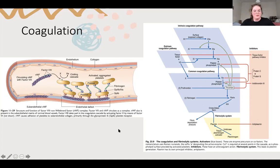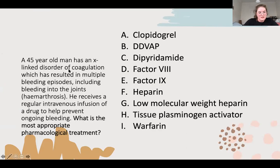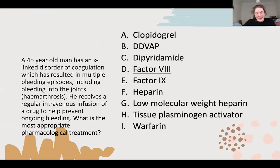Question: 45-year-old man, X-linked disorder of coagulation, multiple episodes of bleeding, bled into his joint, gets regular transfusions of some drug. This is haemophilia A - factor eight - and it's more common than haemophilia B which is factor nine. Haemophilia A and factor eight sort of sound the same and it's the more common one. Haemophilia B is factor nine and that is Christmas disease, apparently named after the patient who had it.